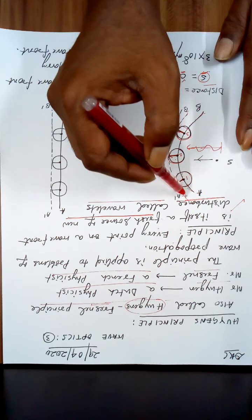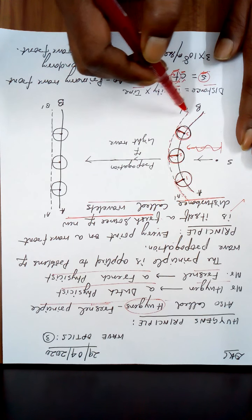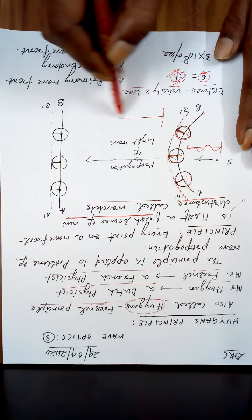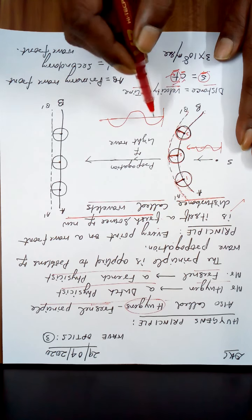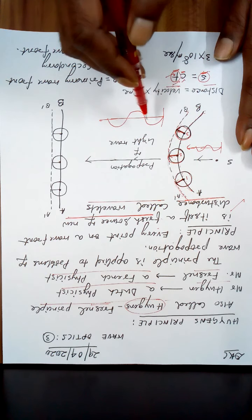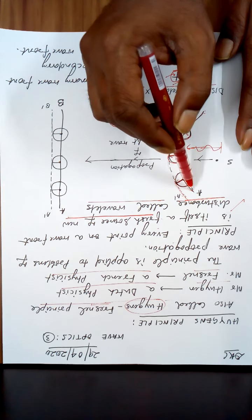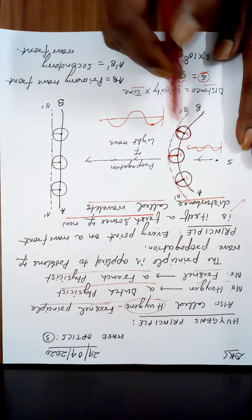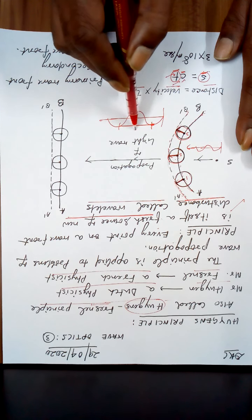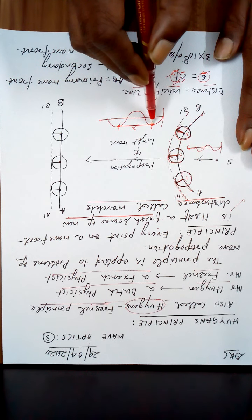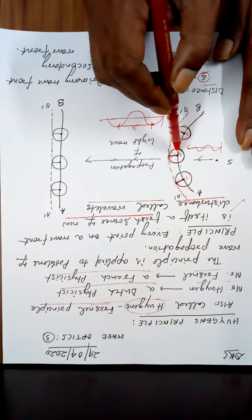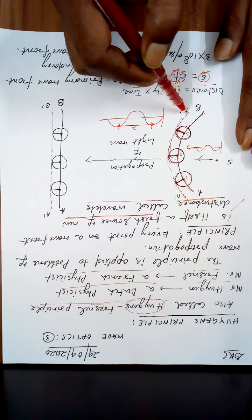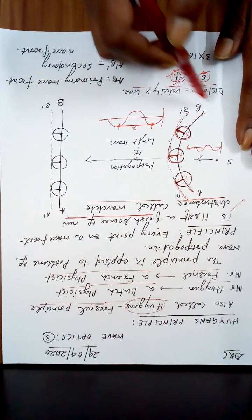But all the points on A'B' may not be identical to all the points on AB. Suppose all the points on the wavefront AB are in a certain state. If the distance from AB to A'B' is equal to lambda (the wavelength), then this point will be identical to that point. So only if this distance equals lambda will all the points on A'B' be identical in vibration to all the points on AB.